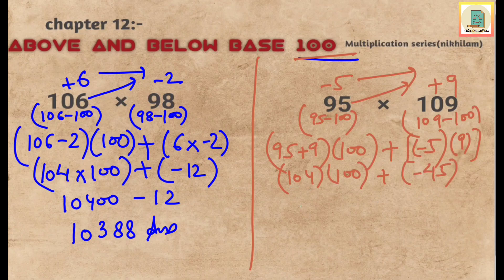So 104 multiplied by 100 gives 10400 minus 45, and the final answer is 10355.